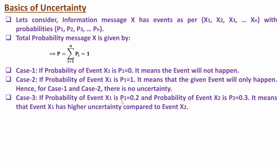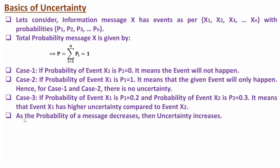Based on probability, one can understand how much uncertainty is there with a given event. If you have 0 probability or 1 probability, then there is no uncertainty, because that probability value defines whether the event will not happen or will only happen. But if you have probability in between 0 and 1, and if probability is lower, then uncertainty is higher. As probability of a message decreases, uncertainty increases.